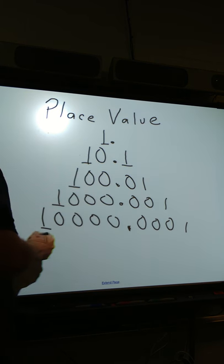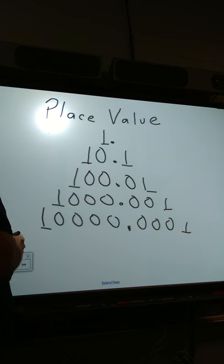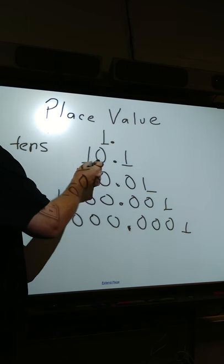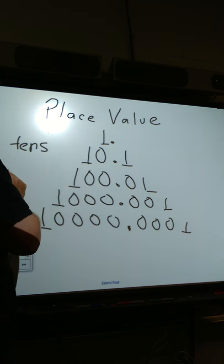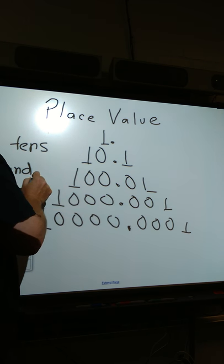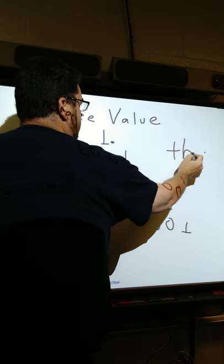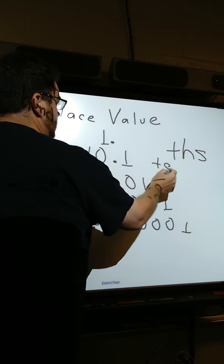What you will see is that the place value on the right side correlates with the left side. As long as they can say the number on the left side, they know the place value on the right side. The only difference is the right side always ends with 'ths,' so this would be tenths.